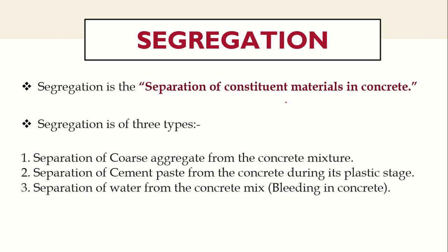The first type is separation of coarse aggregate from the concrete mixture. In good concrete, the aggregates are evenly coated with sand and cement paste, thereby forming a homogeneous mass. But if the concrete is subjected to segregation, you can very clearly observe the coarse aggregate getting separated from the mortar.